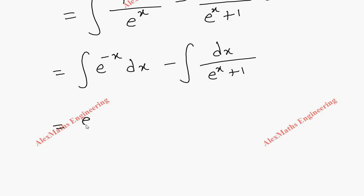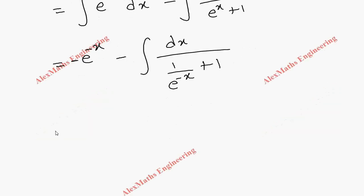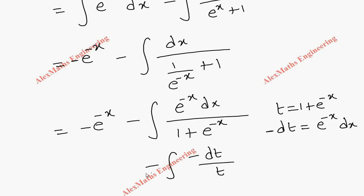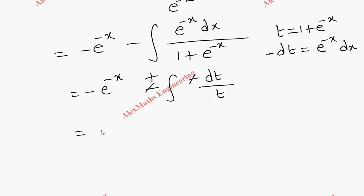The first term integrates to e^(-x)/(-1), keeping the minus sign. For the second term, we rewrite as 1/(e^(-x) + 1). Taking LCM, the numerator becomes e^(-x) dx over (1 + e^(-x)). Substituting t = 1 + e^(-x), dt = -e^(-x) dx, so the integral becomes -∫dt/t = -log(t). Combining: p = -e^(-x) + log(1 + e^(-x)).